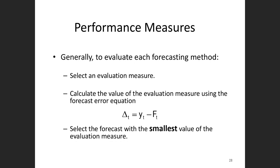To evaluate the performance of a forecast, we need to find the forecast error. The error at time t, delta t, is equal to the actual value at time t minus the forecast at time t. The smallest error — smallest delta — will be the evaluation measure, and we will apply statistical tools.